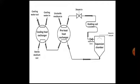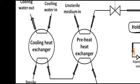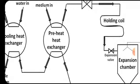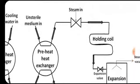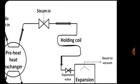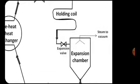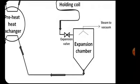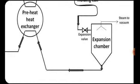In this direct continuous sterilization process, there is also a cooling heat exchanger in contact with cooling water, a preheat exchanger responsible for partial heating or partial cooling, an injector section where steam is directly injected into the medium, a holding coil or holding section, and an expansion chamber connected to vacuum so that steam is immediately absorbed from the sterile medium, leading to instant cooling.